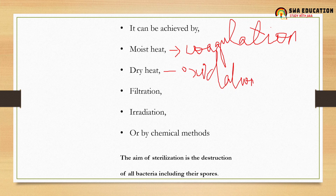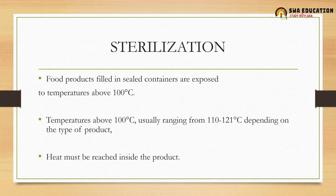The aim of sterilization is the destruction of all bacteria, including their spores — this is very important. During sterilization, raw spores are also destroyed. Food products filled in sealed containers are exposed to temperatures above 100 degrees Celsius. In blanching the temperature is at or below 100 degrees Celsius, whereas in sterilization it is above 100 degrees Celsius.